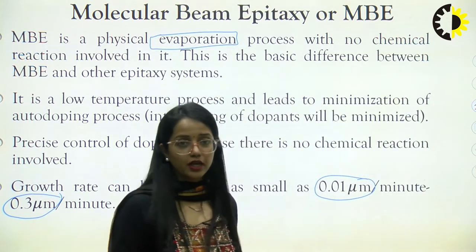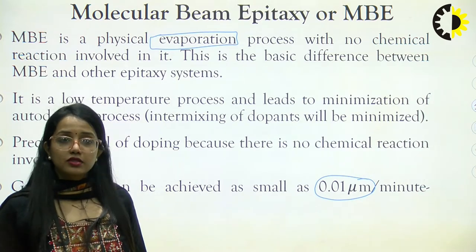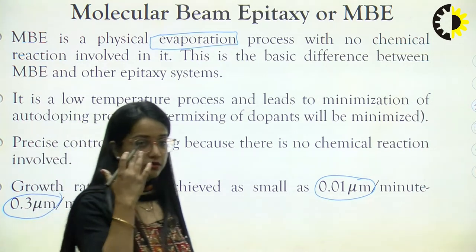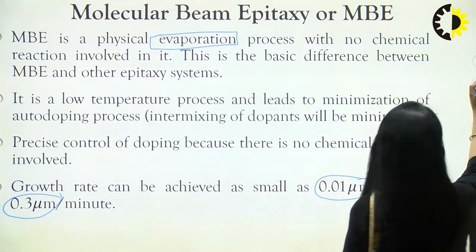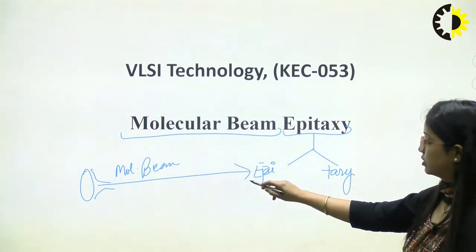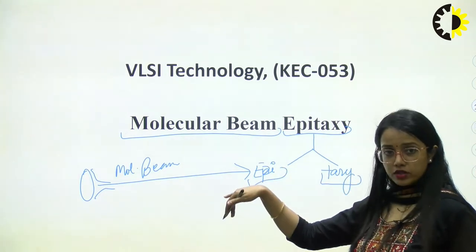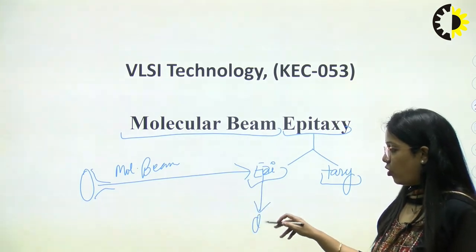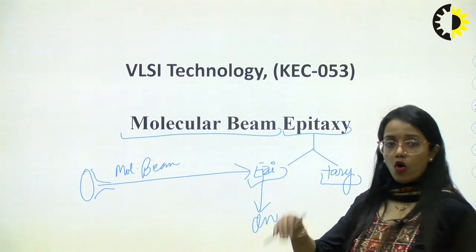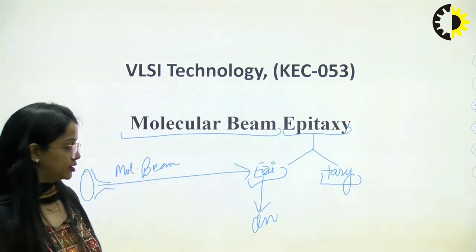When we talk about growth rate, I mean how fast we are able to settle the pattern on top. Epi means on top — we have to realize a pattern on the top of the substrate or the wafer.